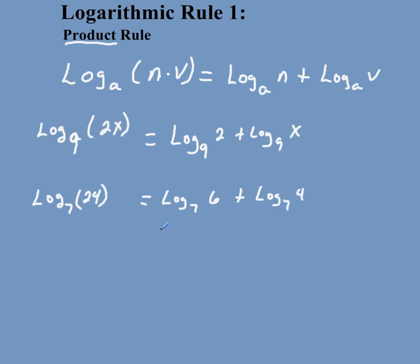Or, another equivalent match would be log 7, 3 plus log 7, 8. I guess another equivalency could be log 7, 2 plus log 7, 12. All of these must equal the equivalent because they all form log 7, 24 using the product rule.